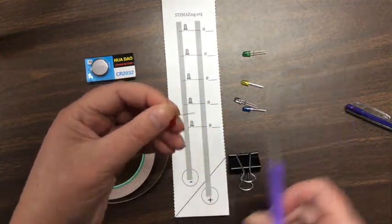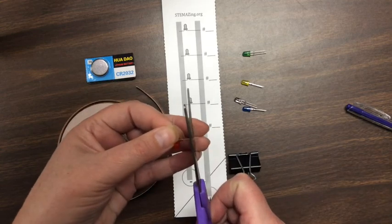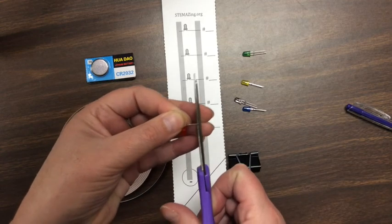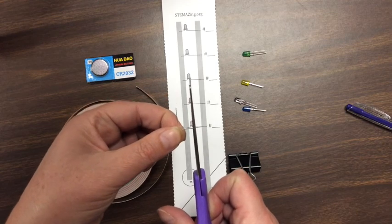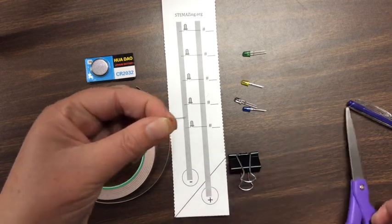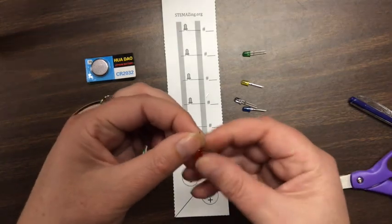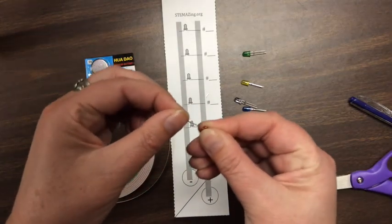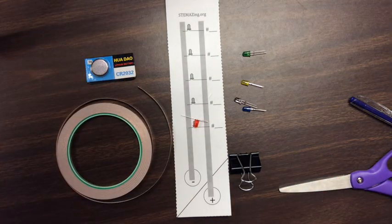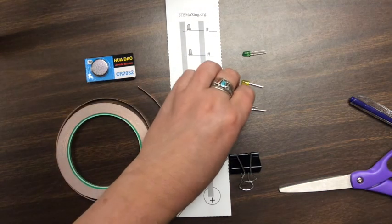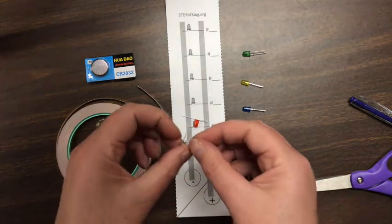Then we're going to take our scissors and cut off about an eighth of an inch off of that short LED lead. So that now when I bend the positive lead out in the opposite direction, it's very obvious which one is the short lead and which one is the long lead. I'm going to do that for each one of these LEDs.